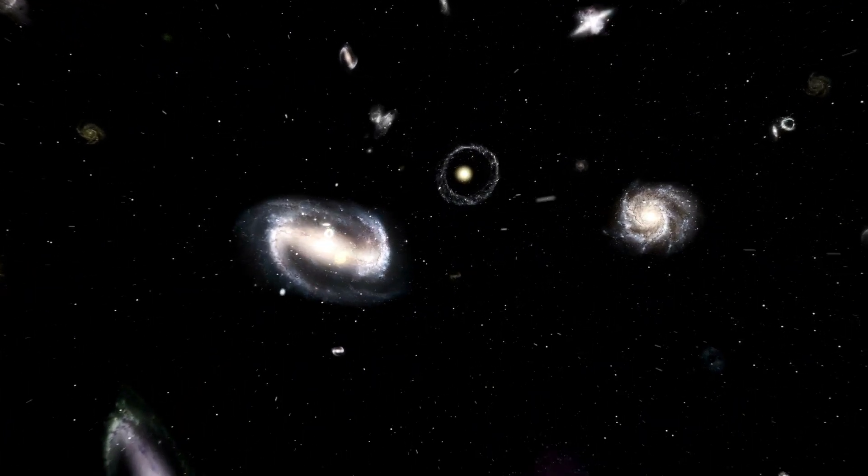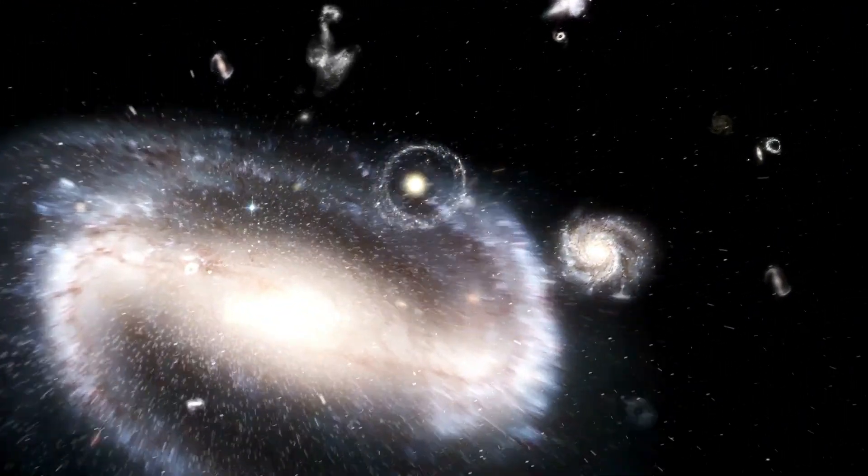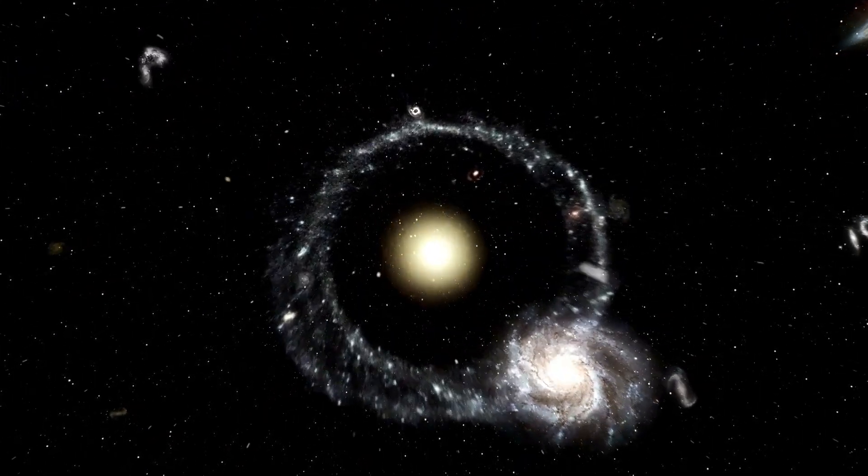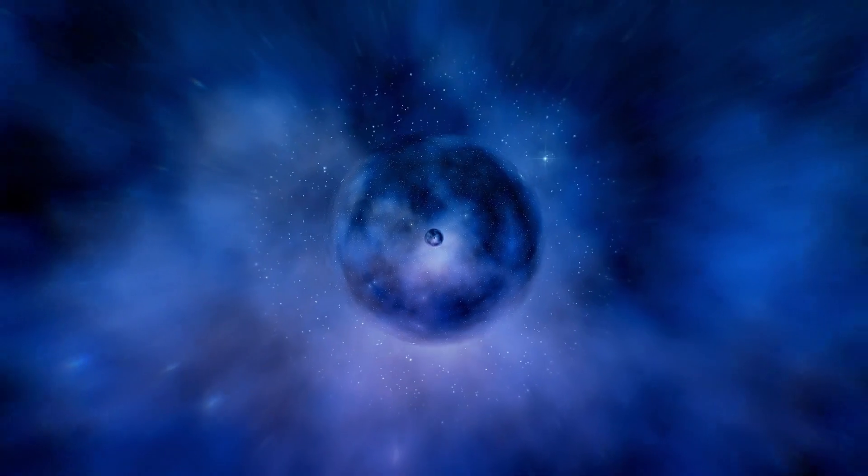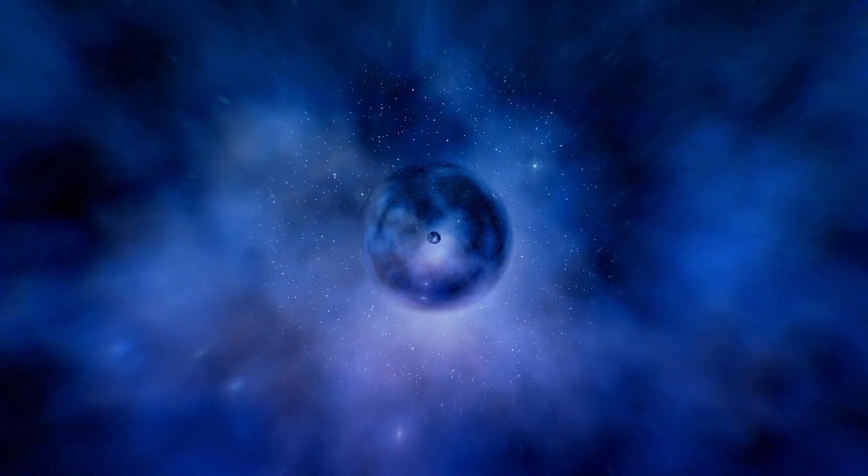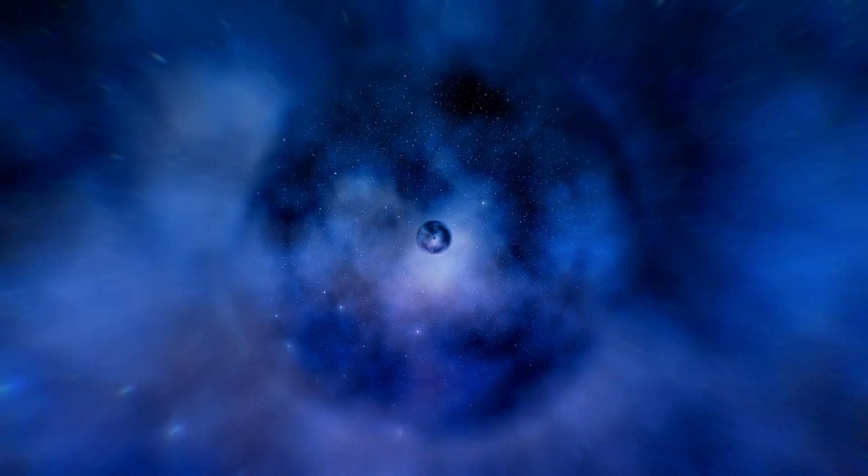Betelgeuse, a red giant star on the brink, is an astronomical marvel. If you put it where the sun is, it would extend out to the orbit of Jupiter. It's enormous, it's very unstable, and it's about to explode.